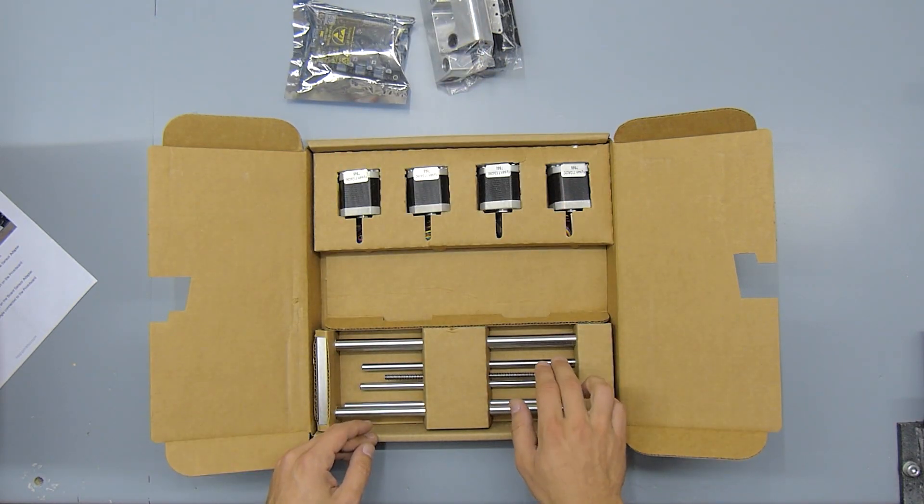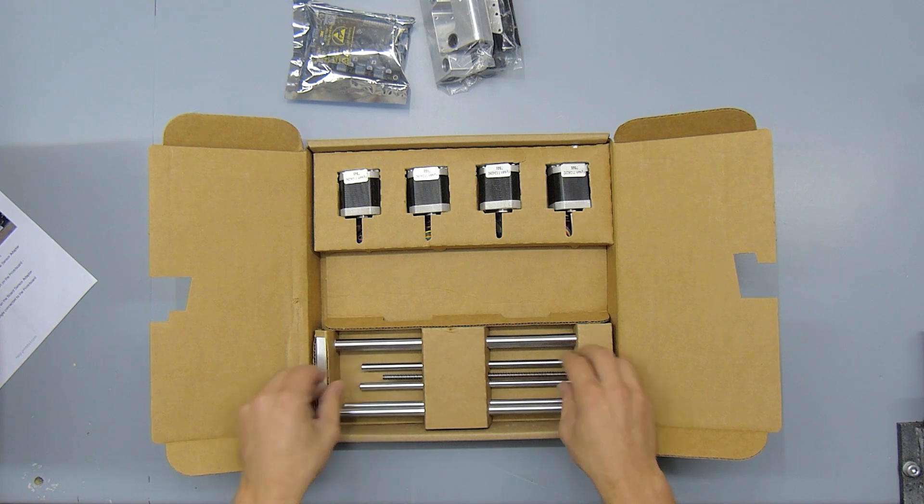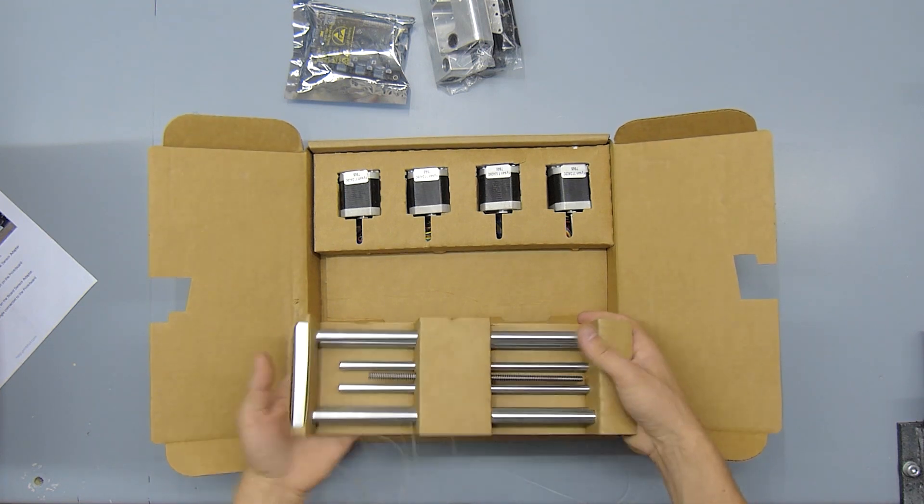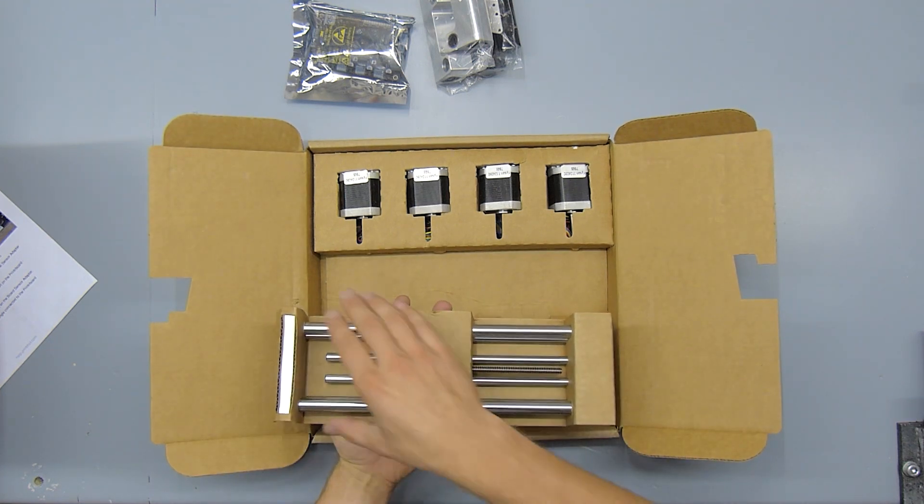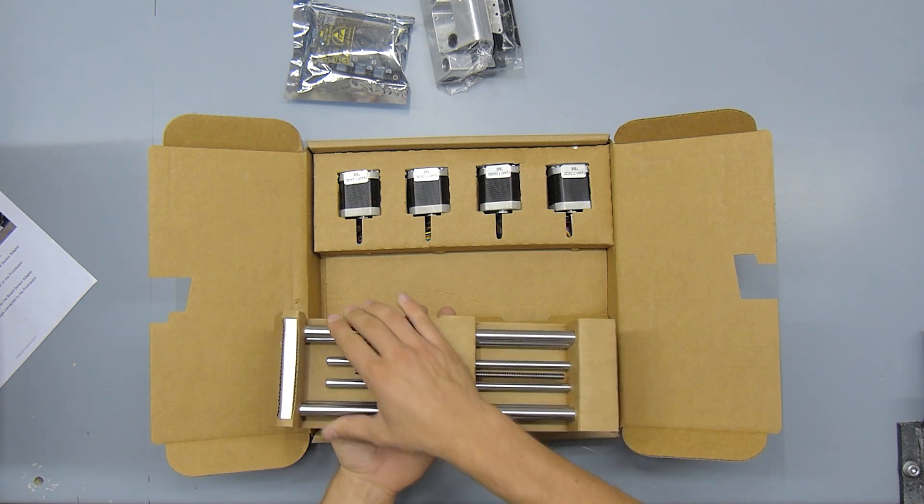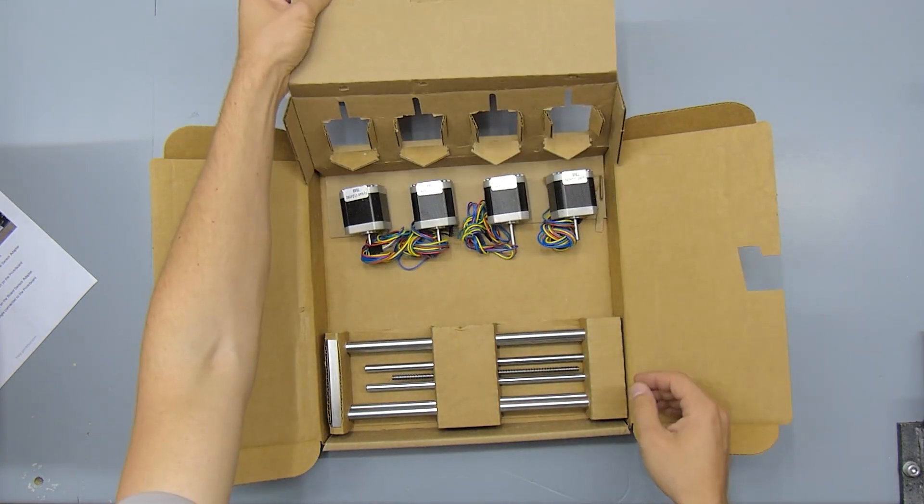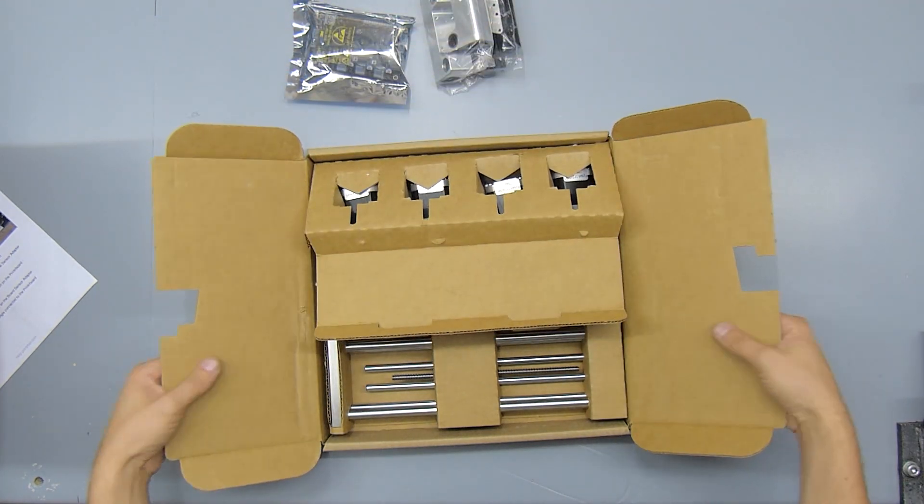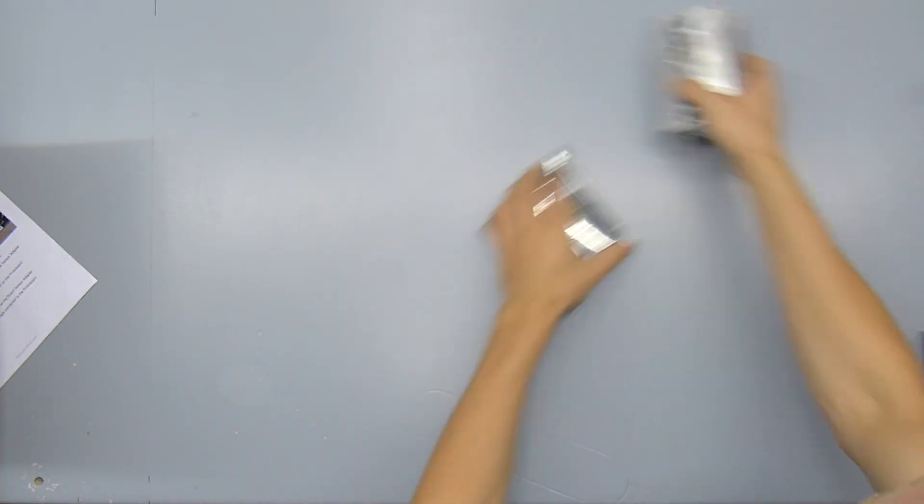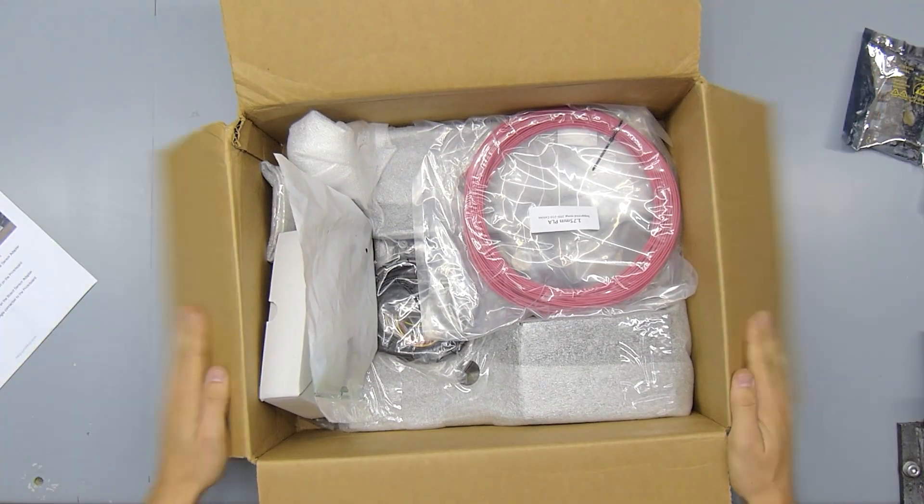And the Z lead screw and the linear rails for Z, X and Y. And these are really nice fat rails for Z there. Let's see if there's anything else in here. Nope. Okay, so what else do we have?